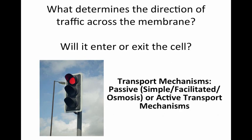What determines the direction of traffic across the membrane — what will enter or exit a cell? Transport mechanisms and transport proteins. There are two different types of transport mechanisms: passive and active. Three examples of passive transport are simple diffusion, facilitated diffusion, and osmosis, which is the transport of water. There are also active transport mechanisms, which we will discuss in more detail in our next lecture.